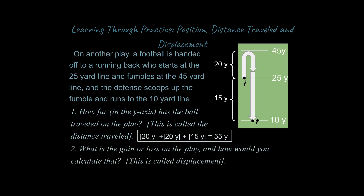Secondly, what is the gain or loss on the play — the displacement? Just like before, that's final position minus initial position. If our final position is 10, we have 10 minus 25, which gives negative 15 yards. In football terms, that would be a loss on the play. Is it possible to have a negative distance traveled? No — mathematically it's not possible. But it is possible to have a negative displacement, because it's the difference between your final and initial location.